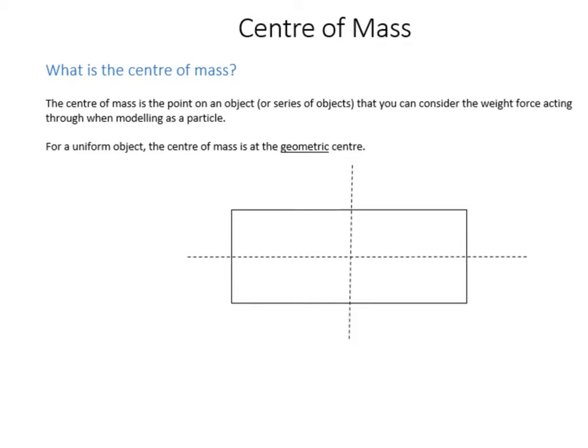When we've looked at this in previous mechanics, the center of mass is where you can model the weight force of an object from. So if you've got a beam, it will be from the center of the beam. So for a uniform object, many of which you'll come across in this course, you can actually find the center of mass at the geometric center. And that's what this video is going to be about, finding the geometric center of various different objects.